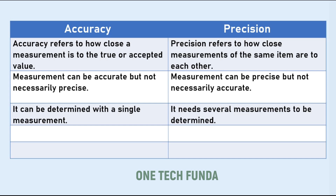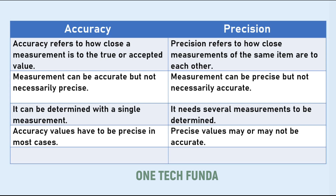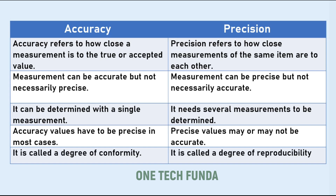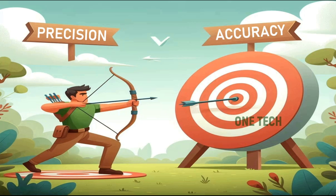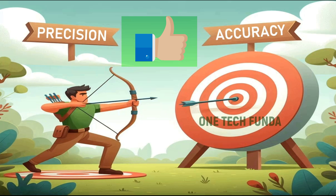Accuracy can be determined with a single measurement, whereas precision needs several measurements to be determined. Accurate values do not have to be precise in all cases, and precise values may or may not be accurate. Accuracy is called the degree of conformity, while precision is called the degree of reproducibility.